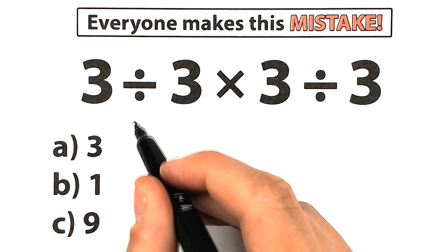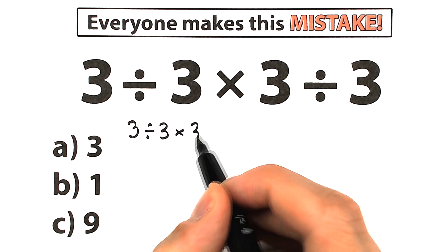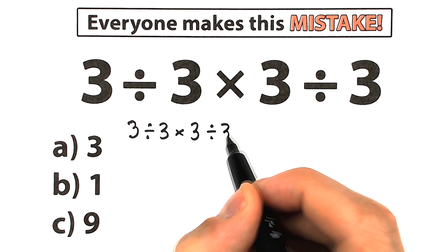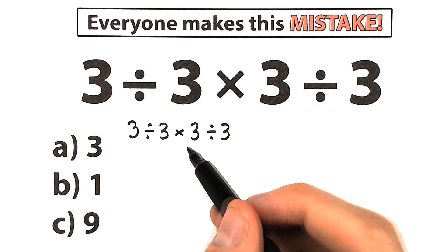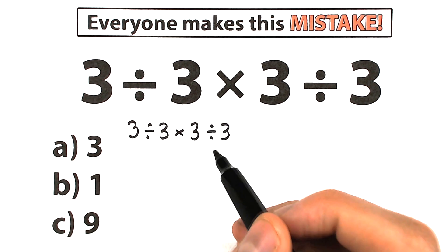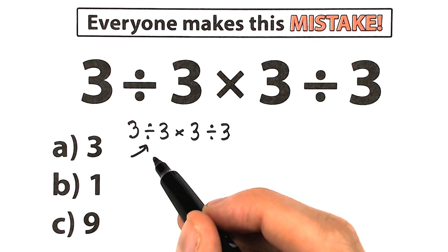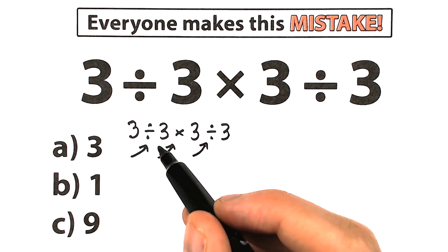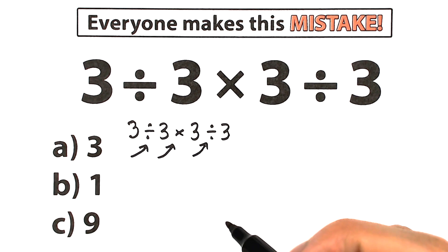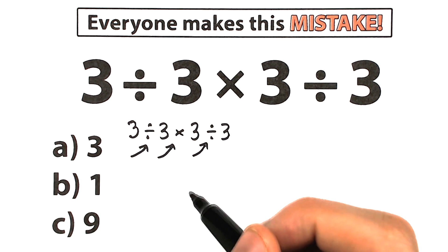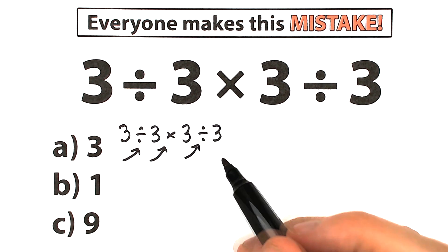I want to rewrite this question: we have 3 divided by 3 times 3 divided by 3. Here's our challenge. A lot of students don't know what we should do first — should we divide first, multiply first, or divide on the right-hand side? This is a very important moment because in math we need to know the correct order of operations. Whatever order we select is going to create a different answer, so we need to understand the correct order to do this problem.